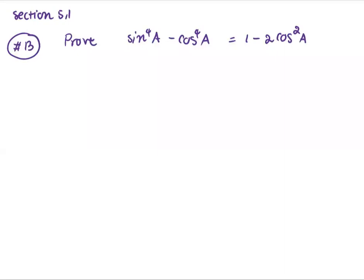Section 5.1, number 13. We're going to prove that sin⁴A minus cos⁴A equals 1 minus 2cos²A, starting from the left-hand side expression.